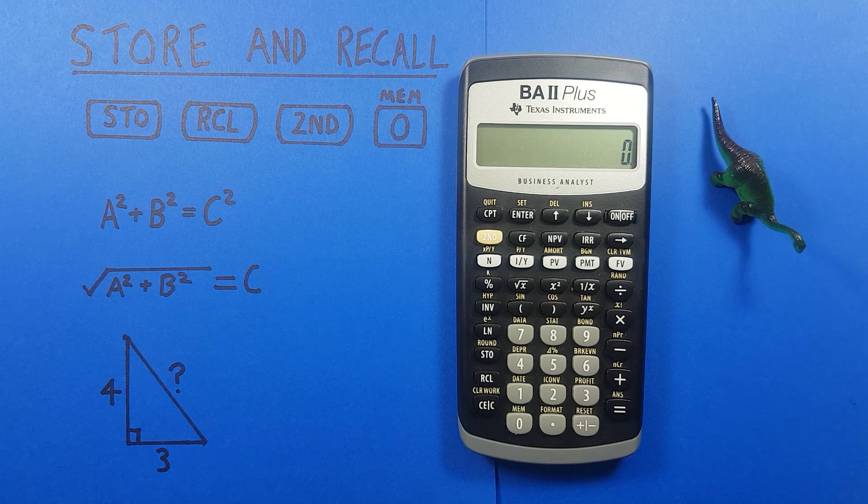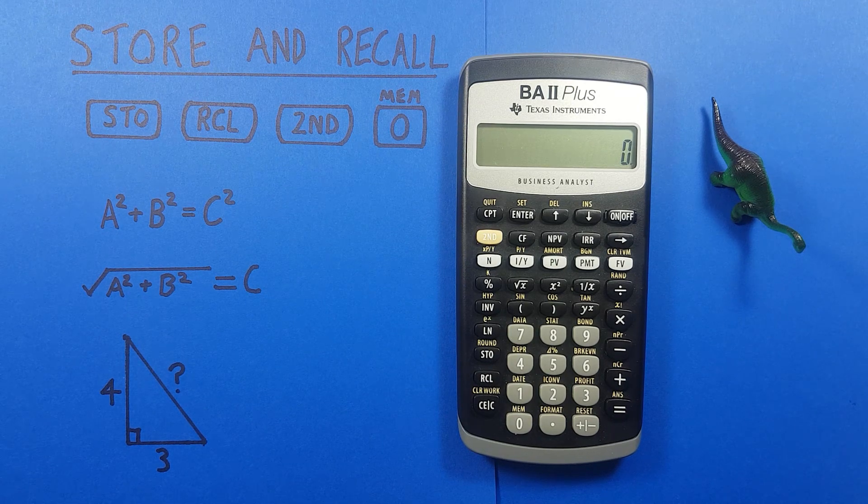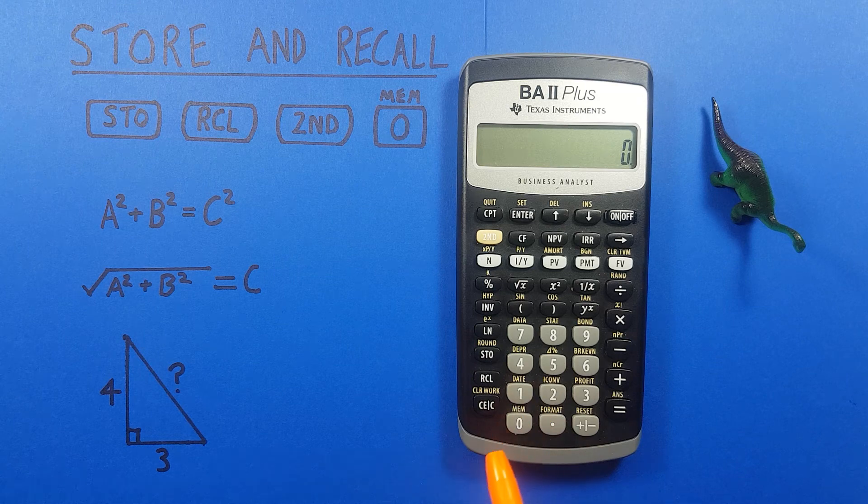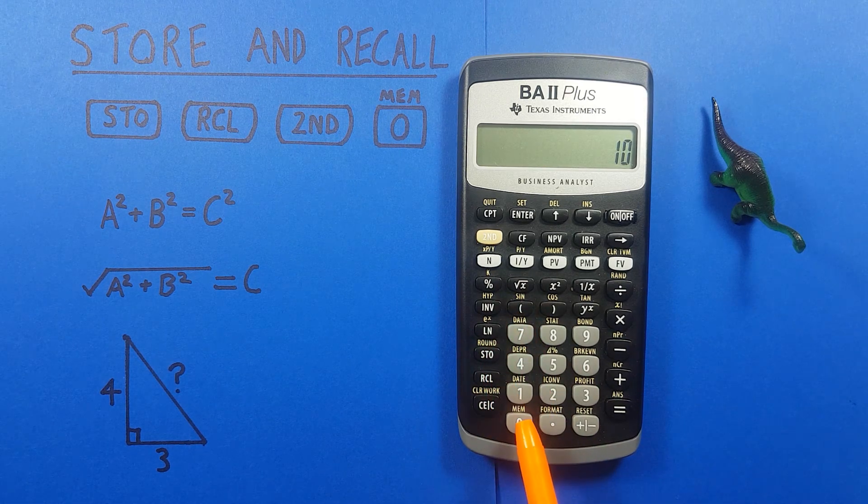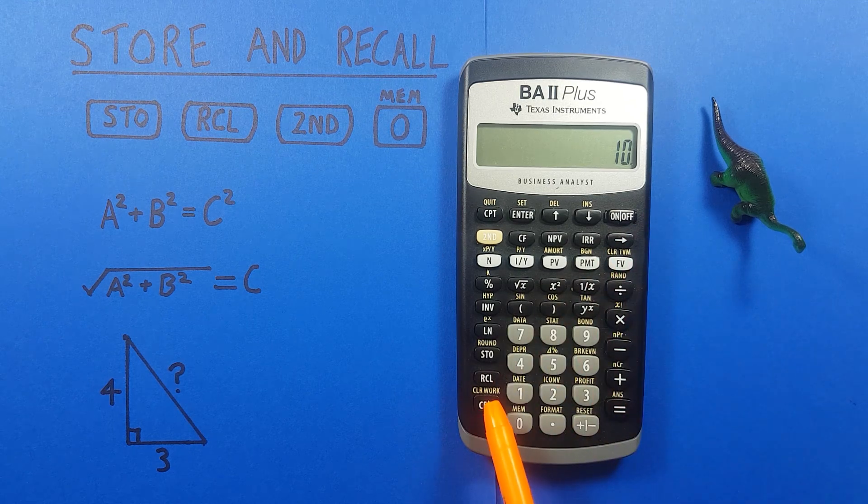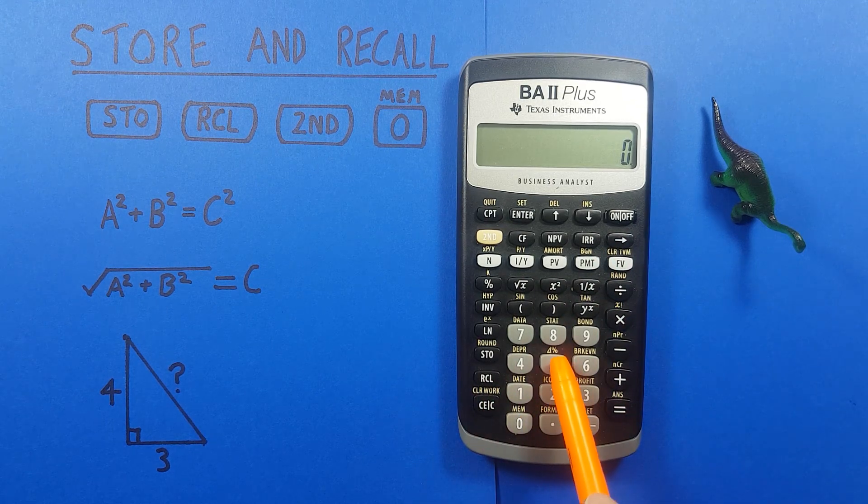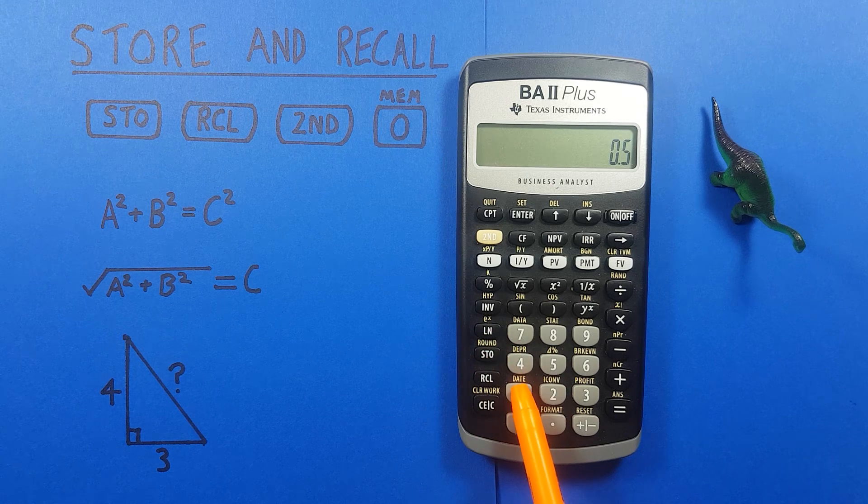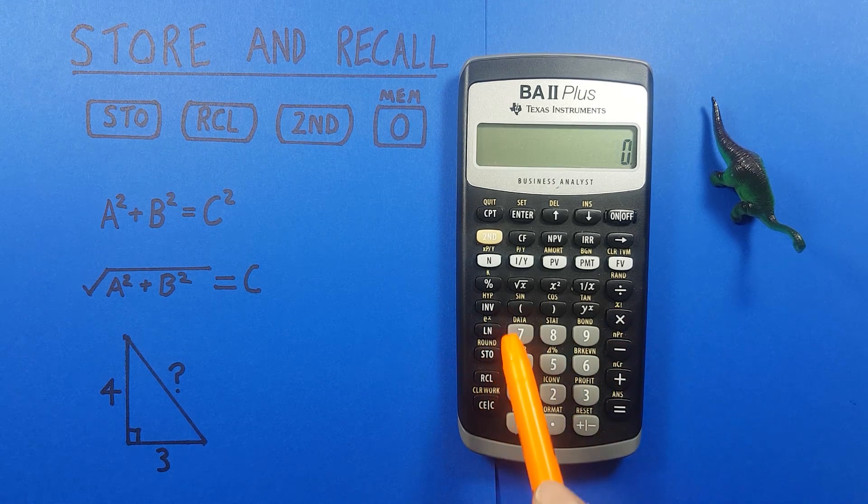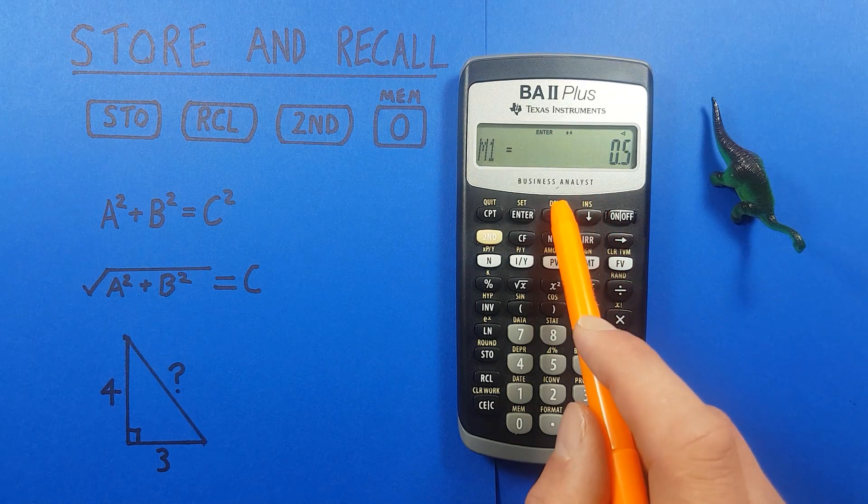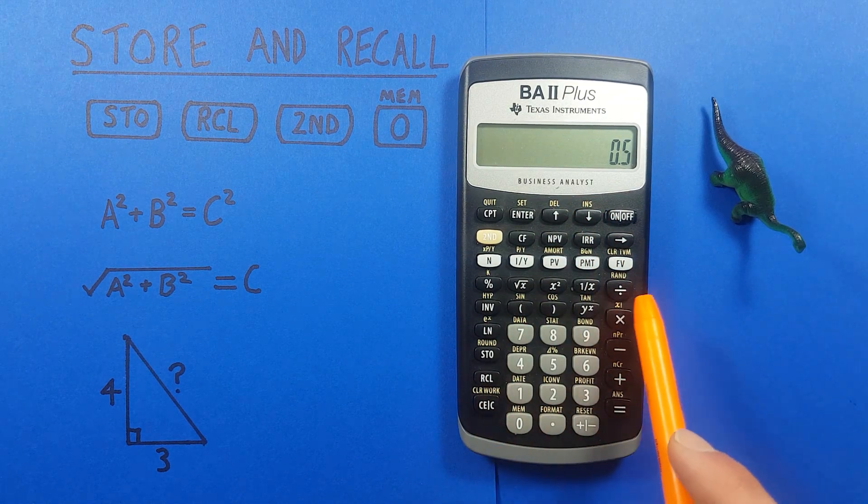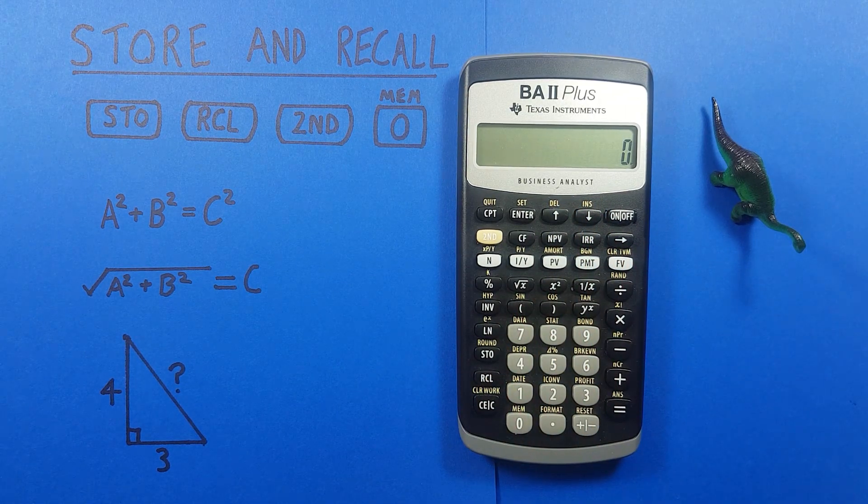You can also overwrite memory slots without clearing all of them by just storing over that single memory slot. So remember if we had 10 stored in 0 and our 0.5 stored in 1, and we only wanted to overwrite our memory slot 0.